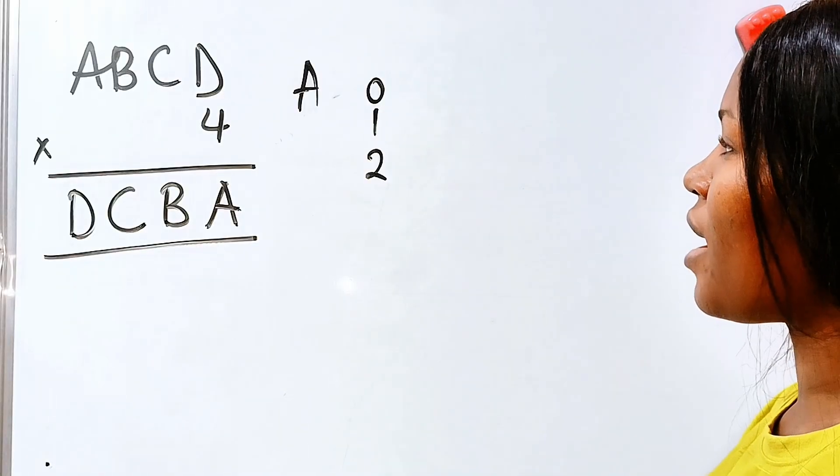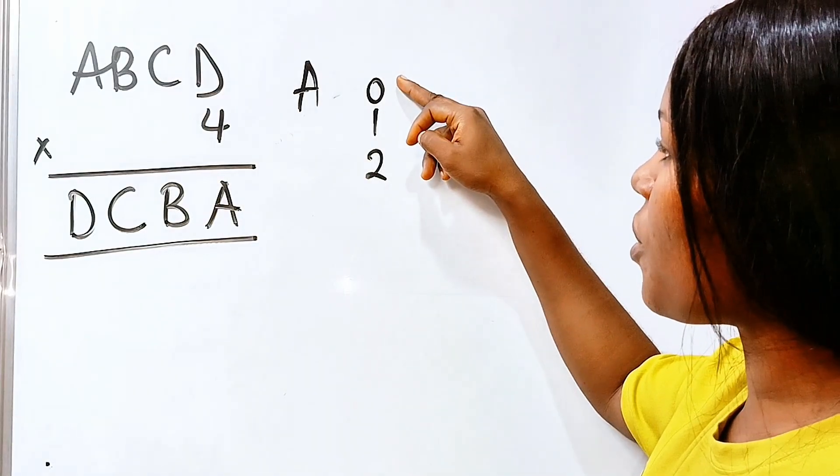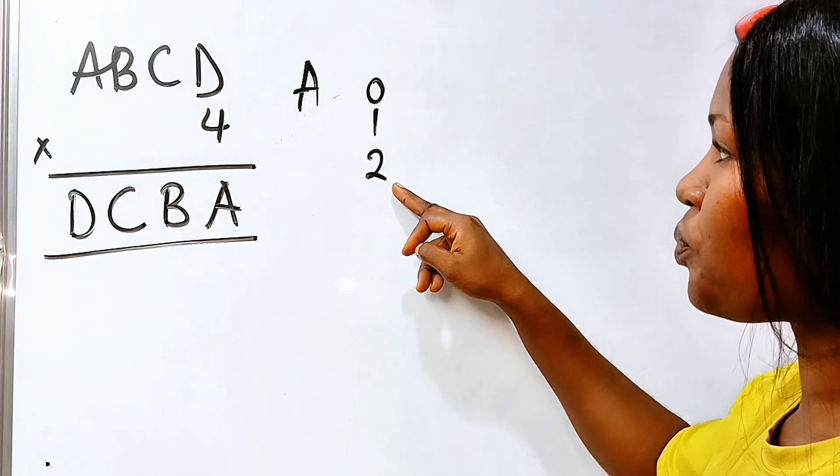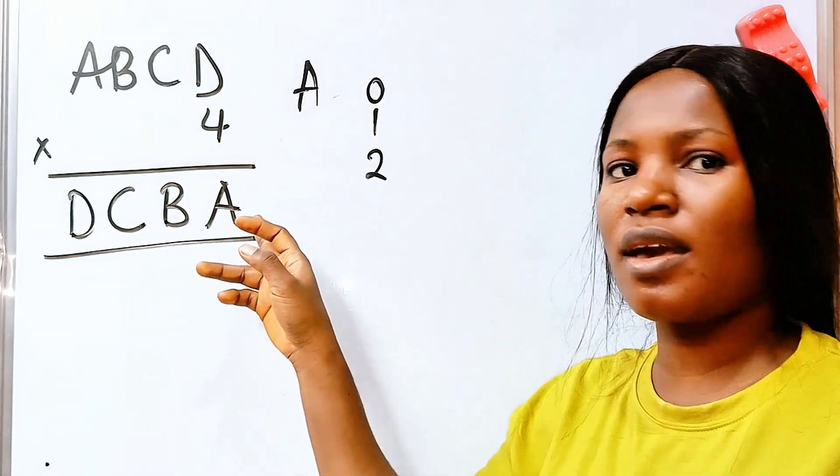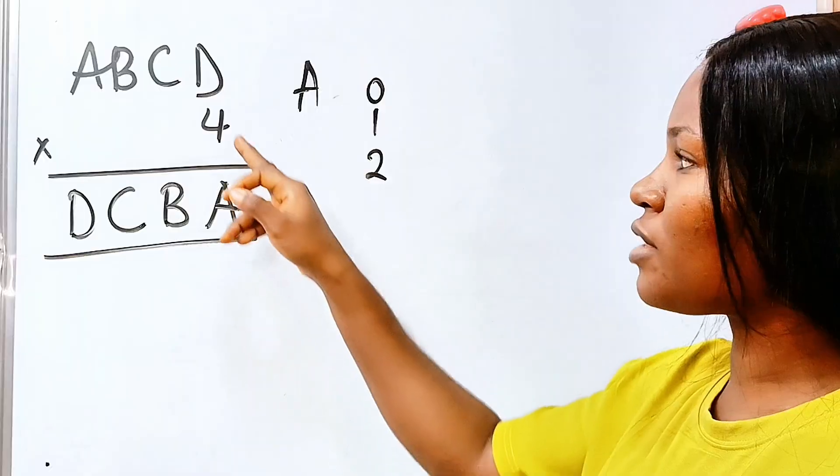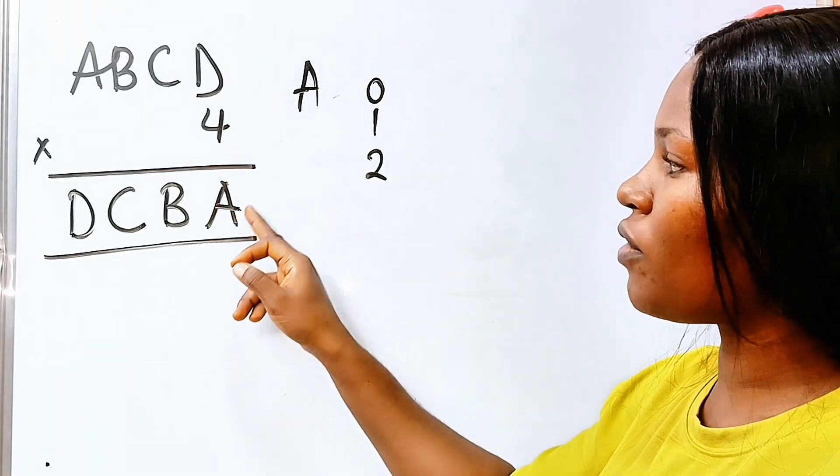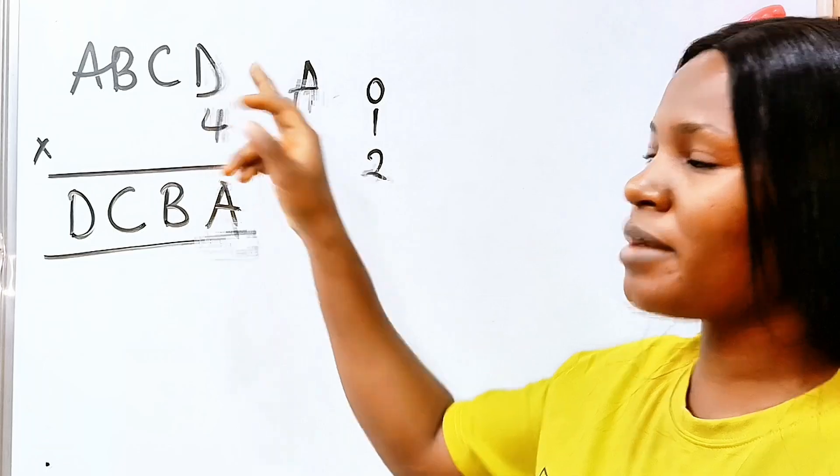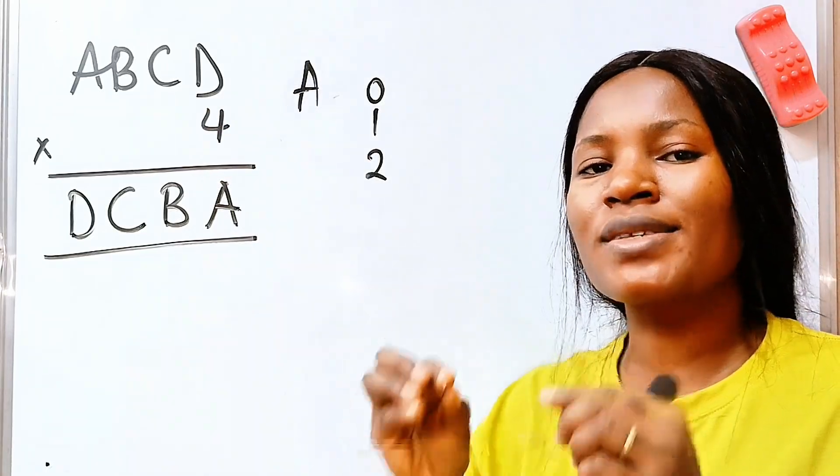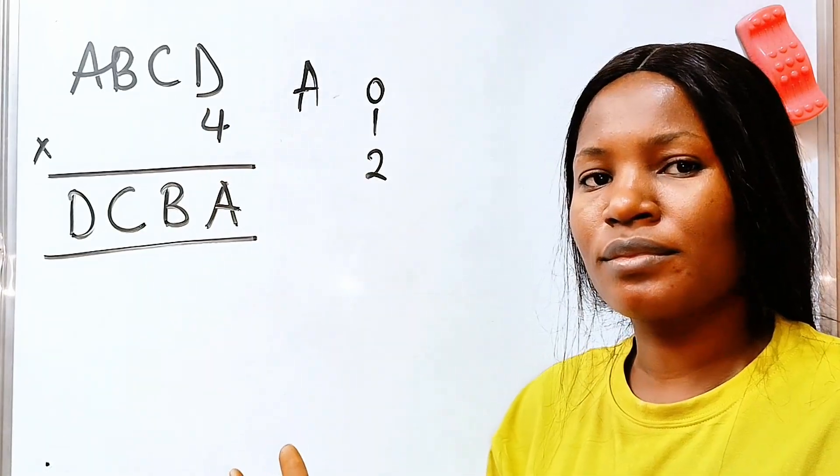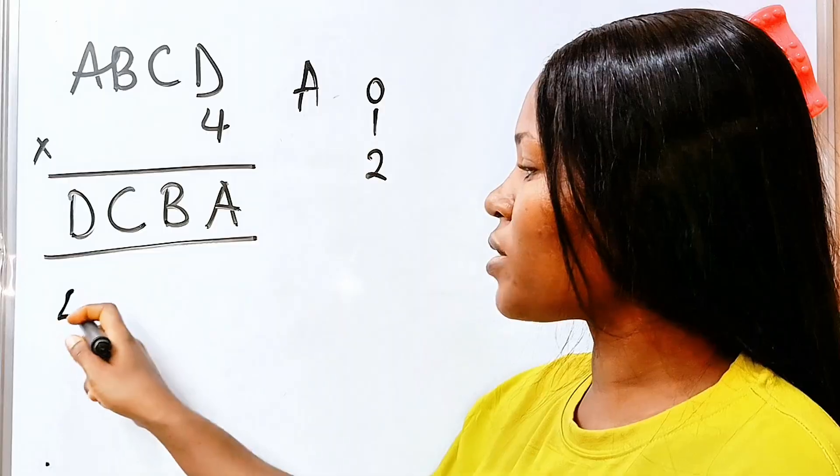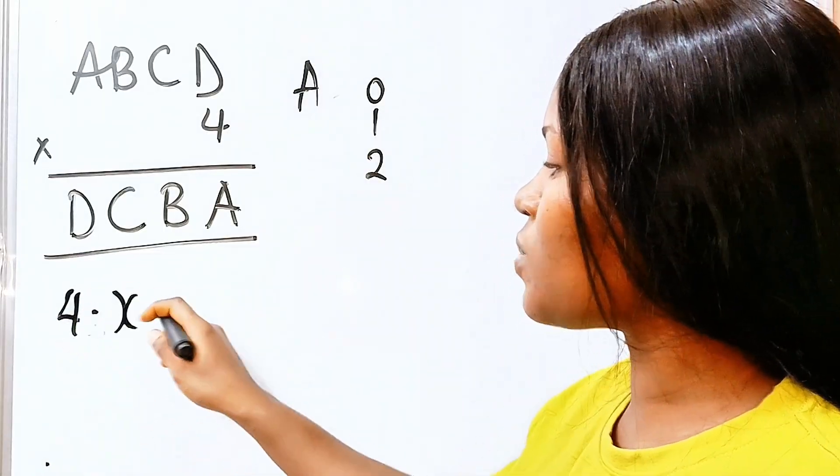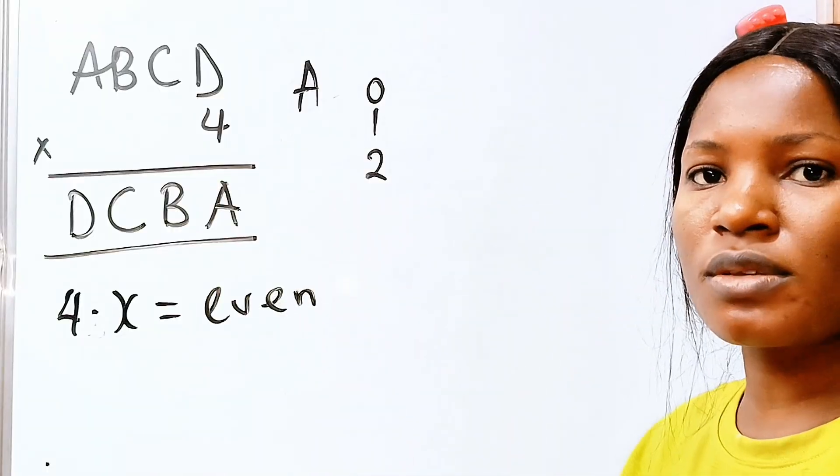So it simply means that our A can be 0, 1, or 2. It cannot be more than those. Because if it's more than those, we are going to have five digit numbers here. Now, how do we verify if it is 0, 1, or 2? Now we have A here again. Remember that 4 times D will give us the number that will be A. And 4 times any number will always give us an even number.